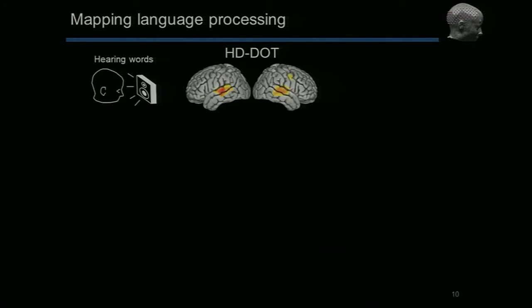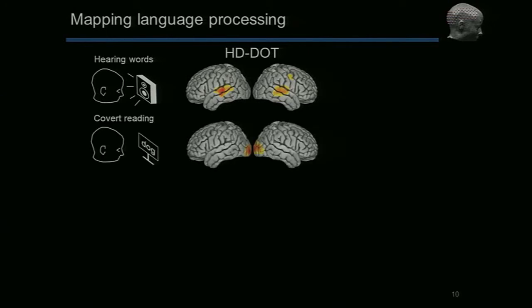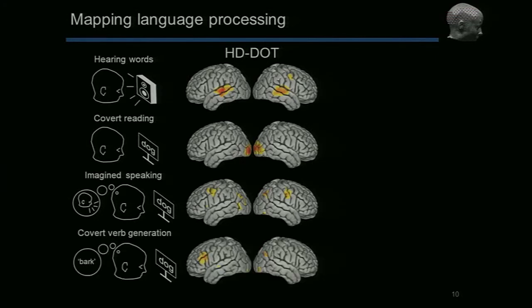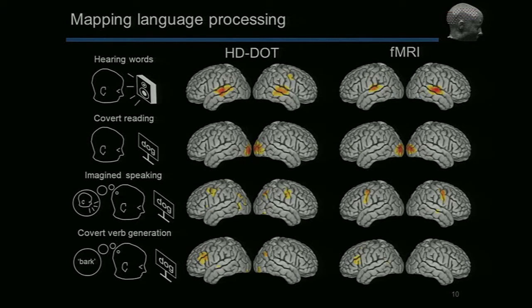To assess the imaging capabilities of this instrument, we started with a hierarchical language processing task study. When subjects heard words, it lit up the auditory cortex. When they read words, it lit up the visual cortex. When asked to imagine speaking — not actually moving their lips, just thinking about it — it activated the motor cortex. Finally, when asked to read nouns like 'dog' and generate a verb like 'bark,' this activated Broca's area, a high-level language processing region. To validate these images, we took the same eight subjects and imaged them with fMRI, getting pretty good agreement between the two imaging modalities.